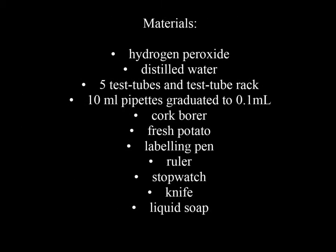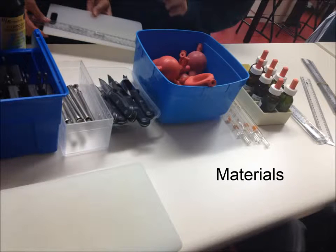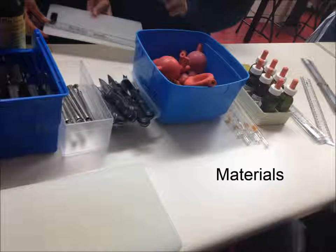Materials needed for this experiment include hydrogen peroxide, distilled water, five test tubes, a test tube rack, a 10 millimeter pipette, cork borer, fresh potato, labeling pen, ruler, stopwatch, knife, and liquid soap.